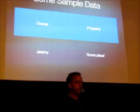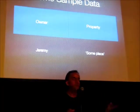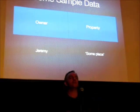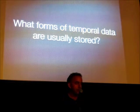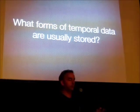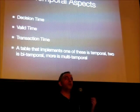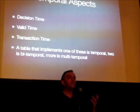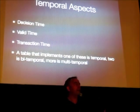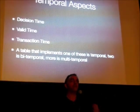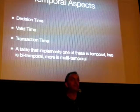The table is simple — you might even say simplistic. It's just two columns: the owner of a piece of property and the name of that property. So, what forms of temporal data are normally stored? In temporal theory we talk about temporal aspects. As of now, there are three main temporal aspects that can be tracked: decision time, valid time, and transaction time.